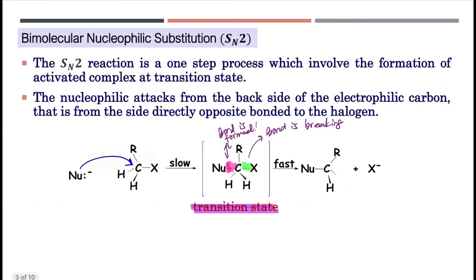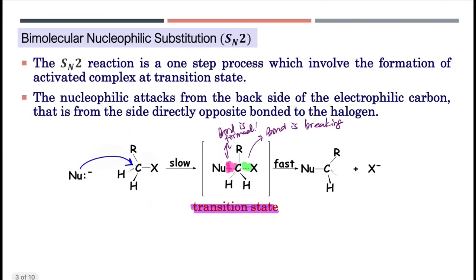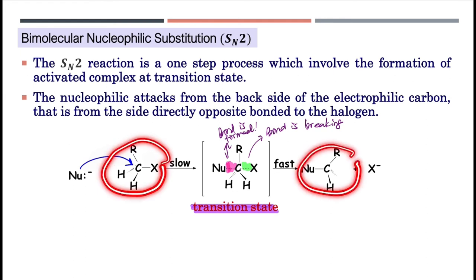The rate determining step involves two species: haloalkanes and nucleophile. Therefore, rate equals concentration RX times concentration nucleophile. It is a second order reaction. And please take note that the SN2 reaction always leads to the inversion of configuration.